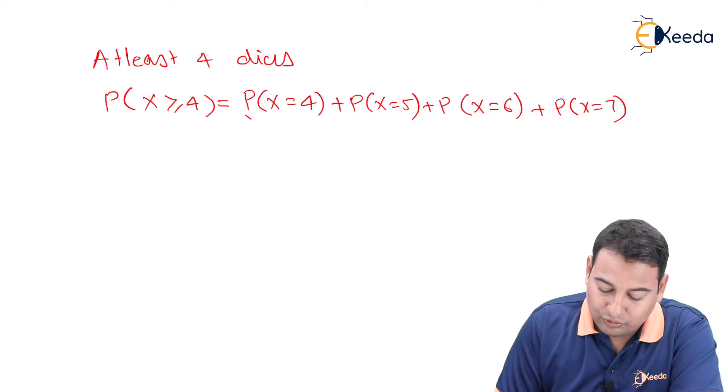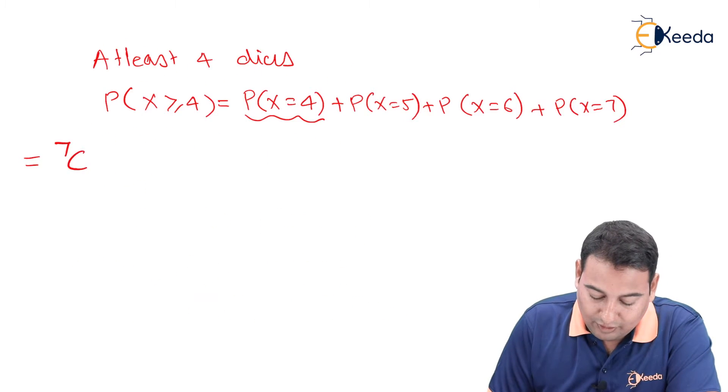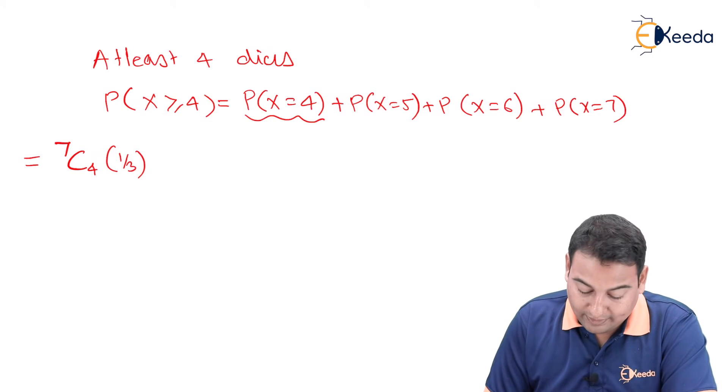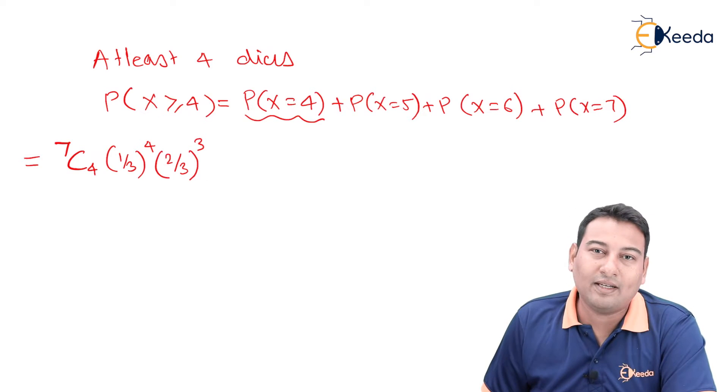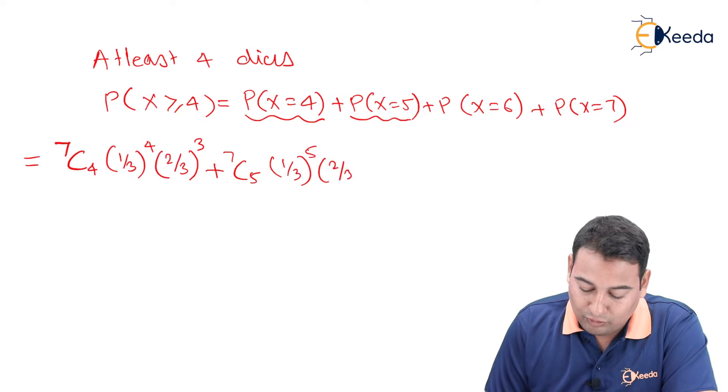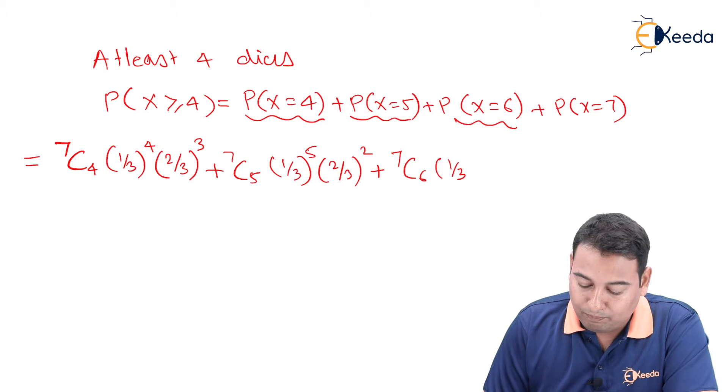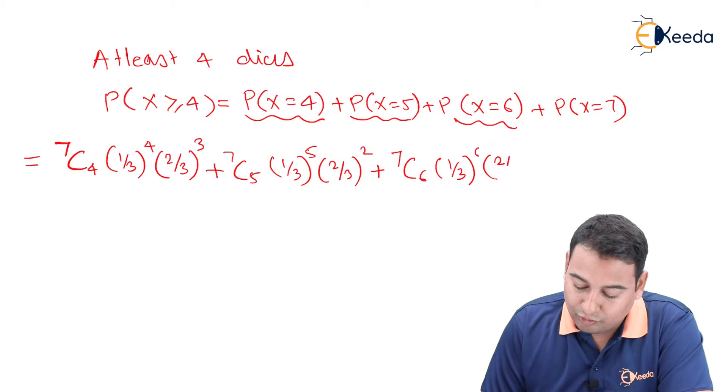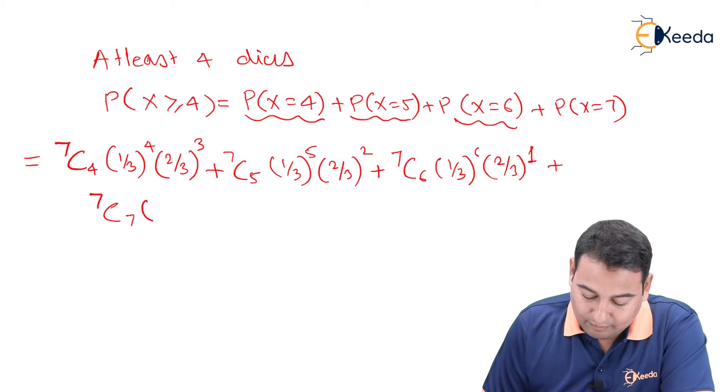Let us put the values into the formula nCx * p^x * q^(n-x). So we have 7C4 * (1/3)^4 * (2/3)^3, plus 7C5 * (1/3)^5 * (2/3)^2, plus 7C6 * (1/3)^6 * (2/3)^1, plus 7C7 * (1/3)^7 * (2/3)^0.